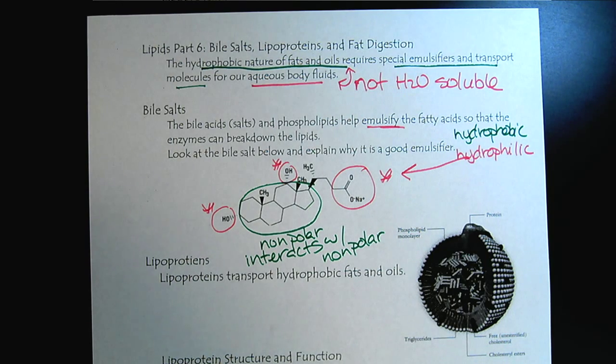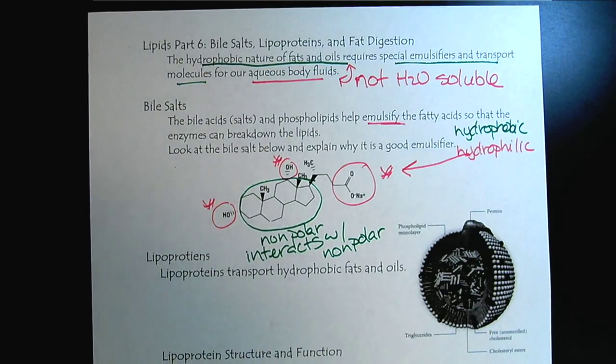We know bile comes from our gallbladder and in the liver to help us primarily digesting fats.